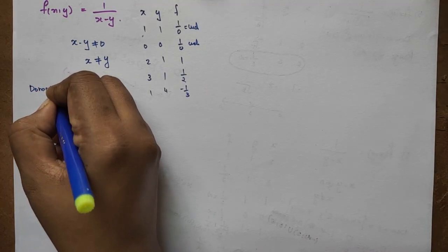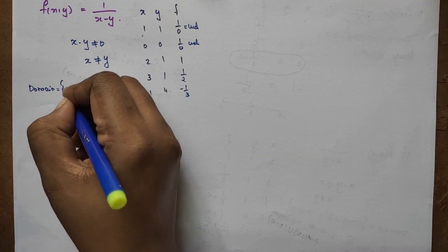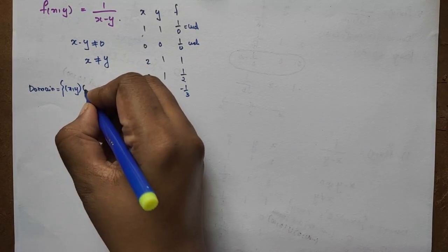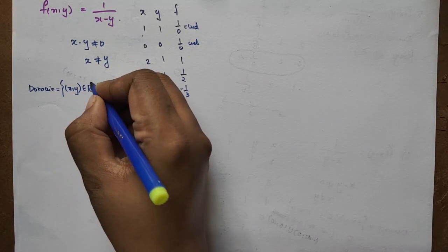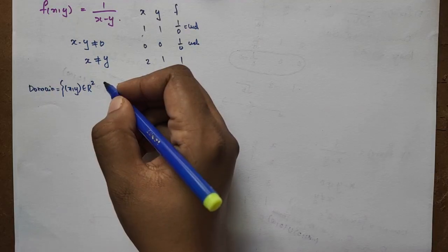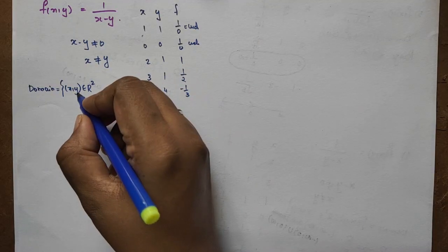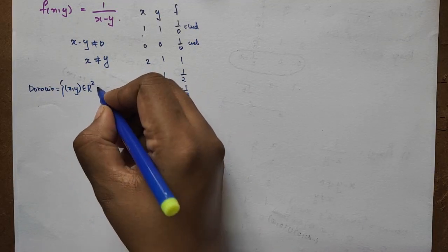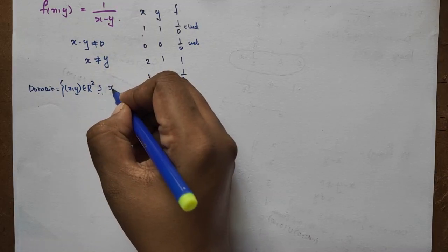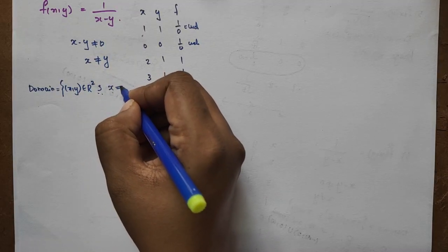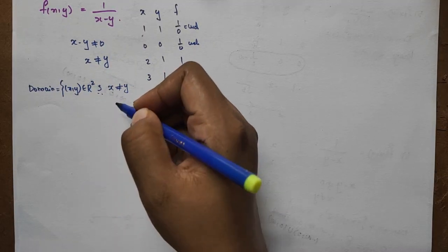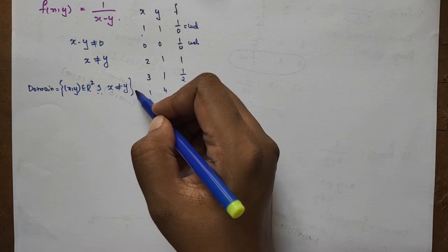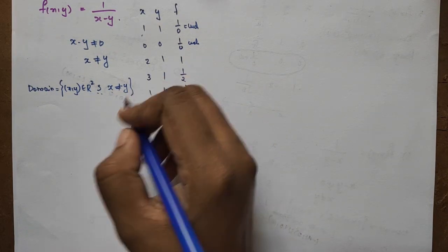The domain is the set of ordered pairs (x,y) in R² such that x is not equal to y. This is the domain condition.